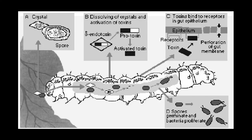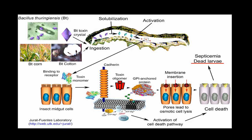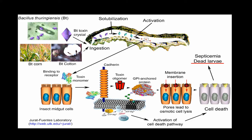The active toxin travels across the peritrophic matrix, and the carboxy region of the toxin binds with specific receptors known as cadherins. This results in pore formation in the gut of the insect. The accumulation of this toxin leads to septicemia and ultimately the insect's death.